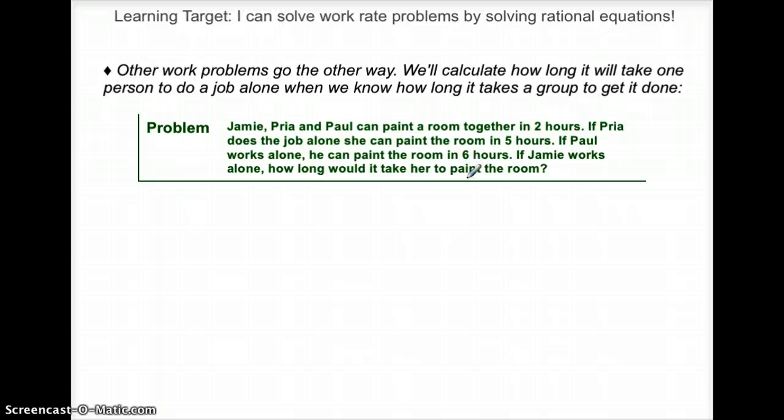Here's another problem. Jamie, Priya, and Paul can paint a room together in 2 hours. If Priya does the job alone, she can paint the room in 5 hours. If Paul works alone, he can paint the room in 6 hours. If Jamie works alone, how long will it take her to paint the room?